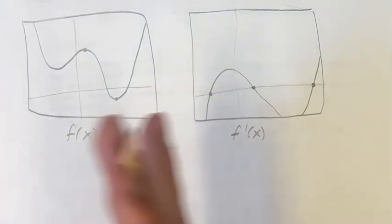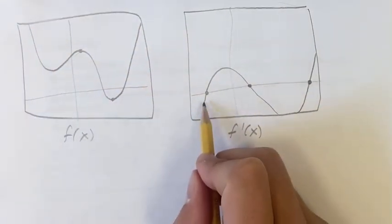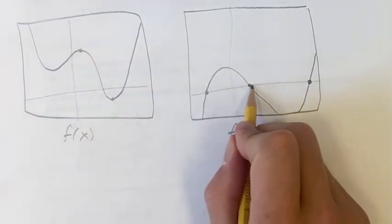So that's how you can relate the two graphs. Increasing means positive value. Decreasing means negative value. Going from one to the other means it's at zero.